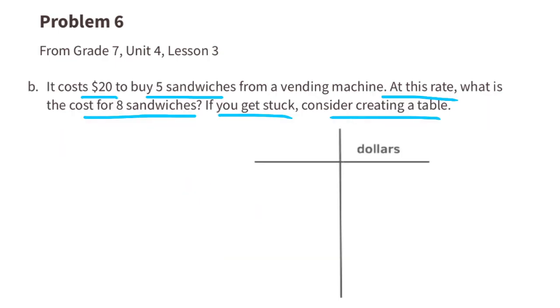B. It costs $20 to buy 5 sandwiches from a vending machine. At this rate, what is the cost for 8 sandwiches? If you get stuck, consider creating a table. The information tells us that you can buy 5 sandwiches for $20. They'd like to know what is the cost for buying 8 sandwiches. 5 times 4 is 20, or 20 divided by 5 is 4. So it's $4 per sandwich. 8 sandwiches times $4 per sandwich equals $32. So to buy 8 sandwiches, it would cost $32.